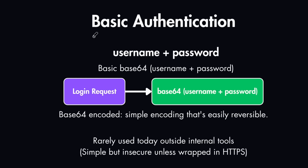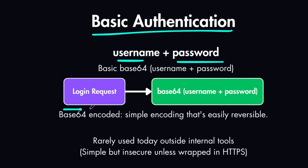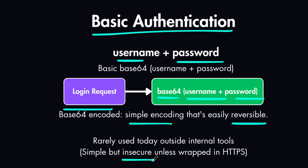The first and simplest type of authentication is basic authentication. This is where you use a username and password in combination, and you send a login request containing the Base64-encoded version of the username and password. This is a very simple way of encoding data, and it's easily reversible. Because it's easily reversible, it's considered insecure unless wrapped within HTTPS. Even with that, it is now very rarely used outside of internal tools within a company.